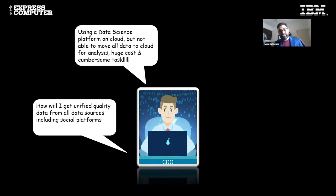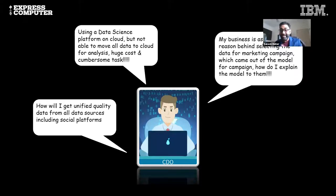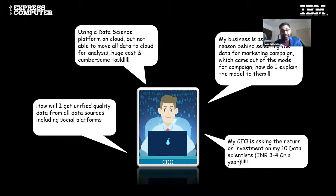The third concern is from an insurance company. They were getting models curated on their data science platform, but when handing over model outcomes to the business team, the business asked why a particular set of customers had been chosen for a targeted campaign — and there were no answers. The platform they adopted lacked explainability. It didn't have the ability to explain why the model selected that set of data — what we call rationalization behind AI, or model explainability.